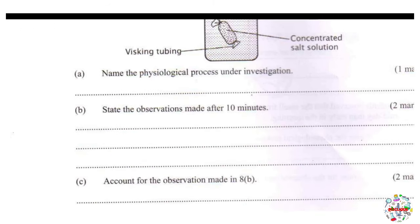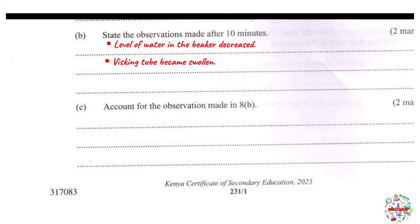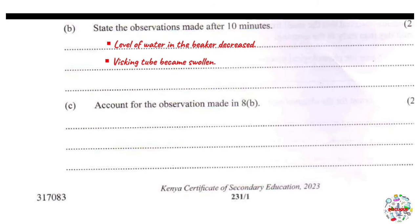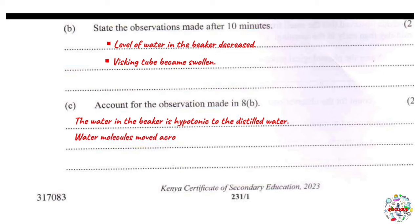Part C: account for the observations made in 8B. We simply explain how these two observations occurred. The water in the beaker is hypotonic to the salt solution in the visking tubing — that is our first point. Next, water molecules moved across the semipermeable visking tubing causing it to swell.